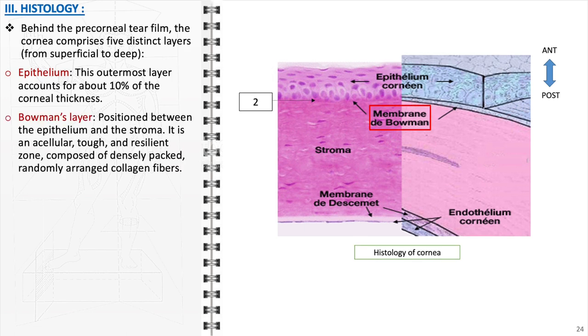The Bowman's layer, located directly beneath the epithelial layer, provides additional protection to the stroma. This acellular layer, composed of densely packed collagen fibers, contributes to the cornea's structural integrity. Although it cannot regenerate, its role in preventing deeper corneal damage is vital.